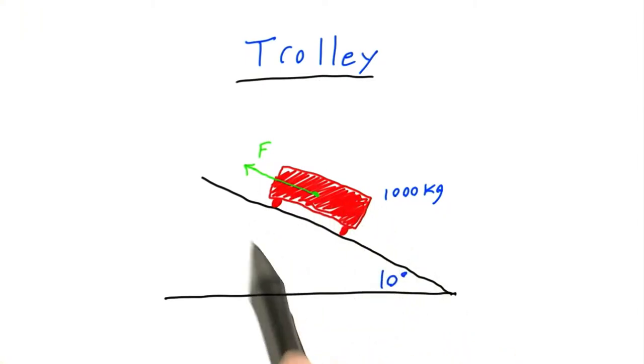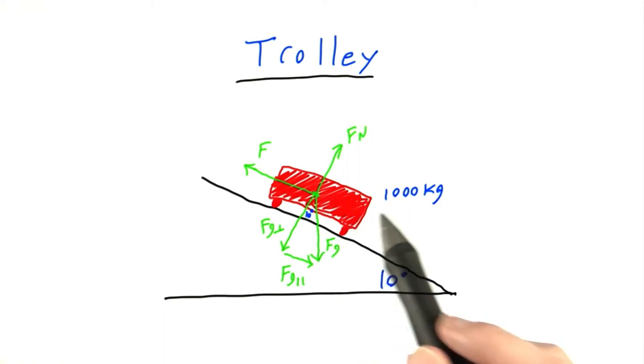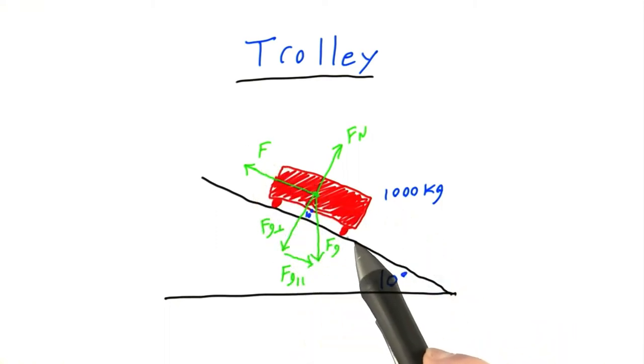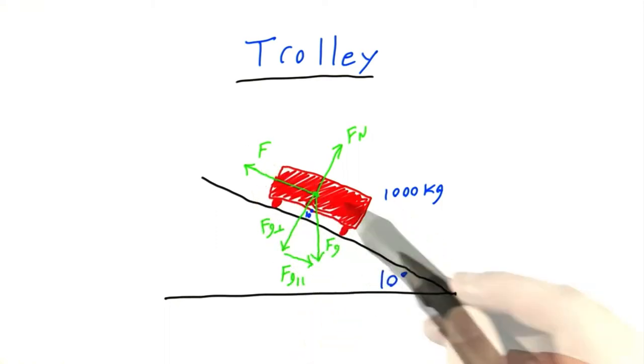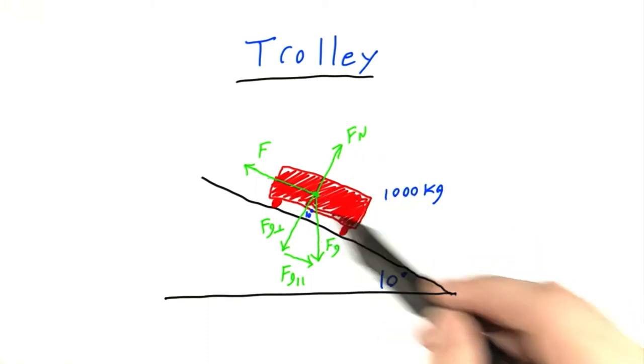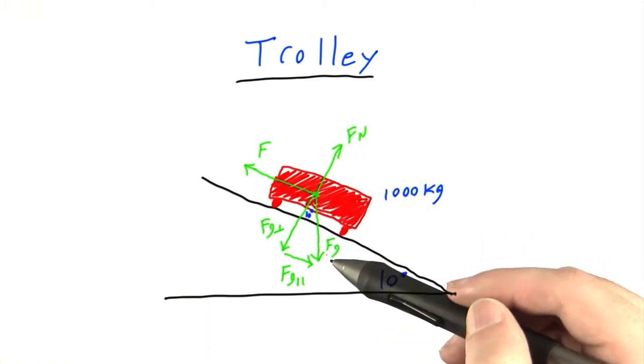So the first thing I want to do here is diagram all the forces that are acting on the trolley. There are three forces acting on our trolley. There's this force F, which corresponds to the road pushing the trolley up the hill. There's the normal force acting perpendicular to the slope. And there's the force of gravity, which points straight down.